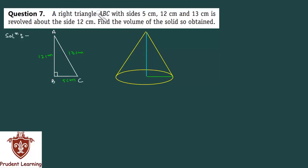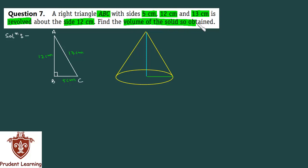A right triangle ABC with sides 5 cm, 12 cm, and 13 cm is revolved about the side 12 cm. Find the volume of the solid so obtained.